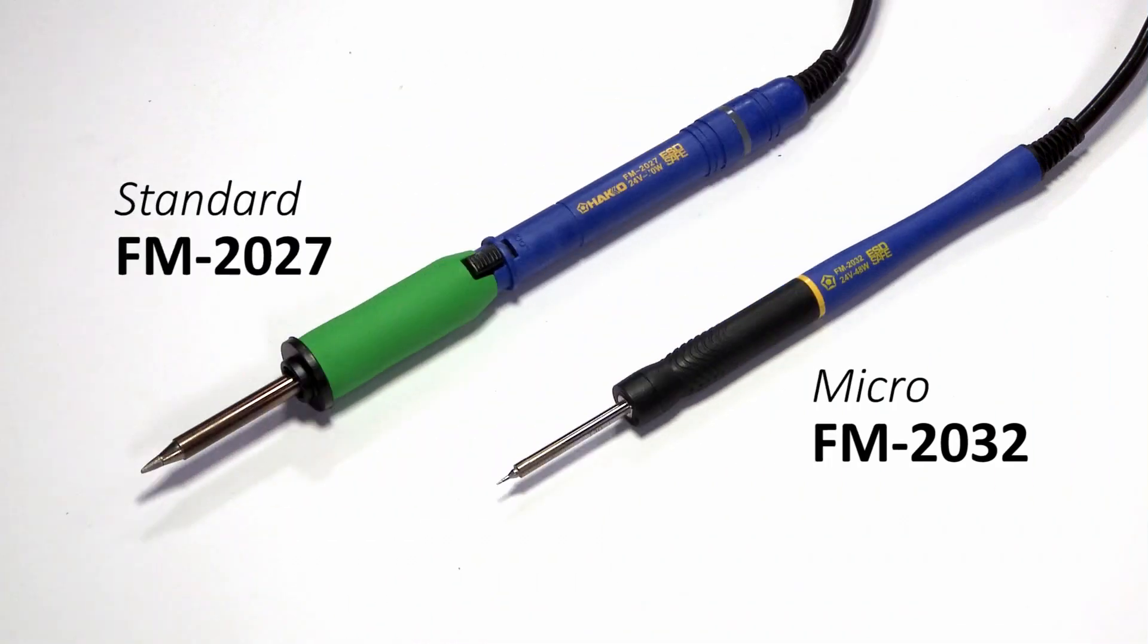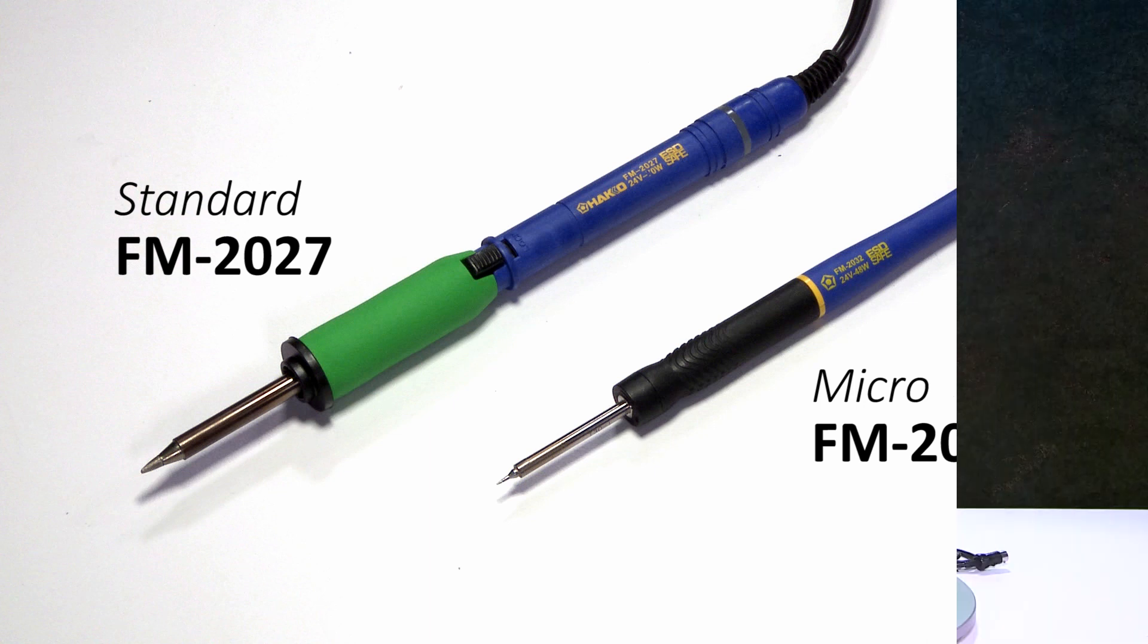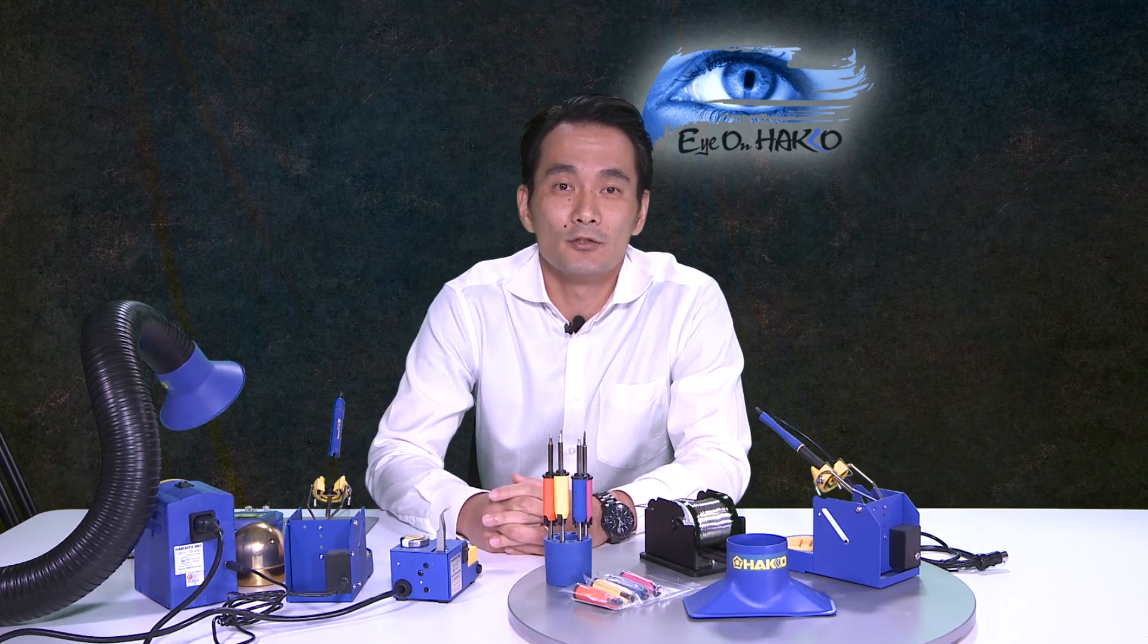Apart from the FM-2027 standard handpiece, you can also use the FM-2032 micro-iron on the FX-951. The micro-iron uses T-30 series tips with six different tip shapes available. That was a general overview of the FX-951 and the different accessories and tips.